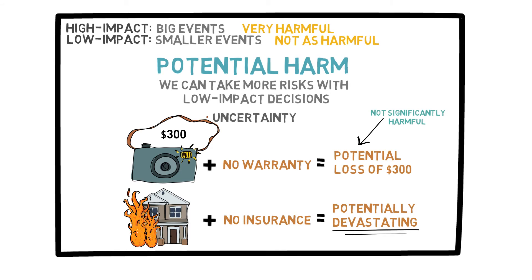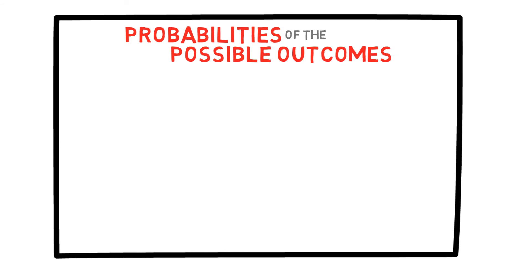In this sense, buying a warranty for your camera would be put into the low-impact category, and buying insurance for your house would be in the high-impact category. As with any decision under uncertainty, it is still important to consider the probabilities of the possible outcomes of your decisions, whether they are high-impact or low.